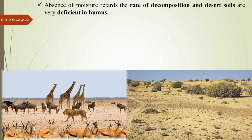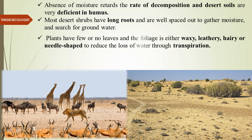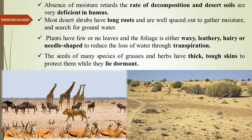Absence of moisture retards the rate of decomposition, so desert soils are very deficient in humus. Most desert shrubs have long roots to penetrate deeper in search of water, and are well-spaced to gather more moisture. Plants have fewer or no leaves, and those present are waxy, leathery, hairy, or needle-shaped to reduce water loss and minimize transpiration. Seeds of many grass species have thick, tough skins.